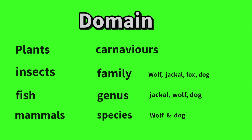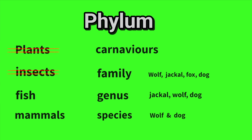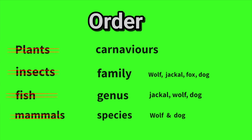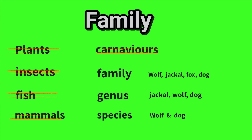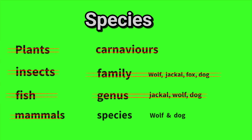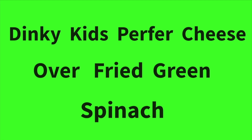After domain, we have kingdom, phylum, class, order, family, genus, and species. The way that we're going to memorize the eight levels of taxonomy from broad to most specific is by using a mnemonic: Dinky kids prefer cheese over fried green spinach. Makes sense.